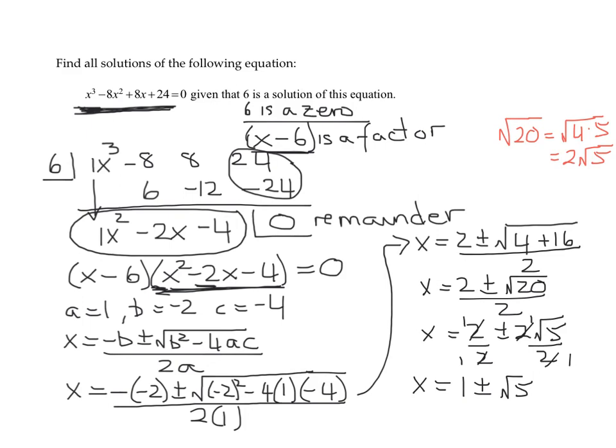So, what are all the solutions? I have x equals, we were given the solution 6. And then we have 1 plus the square root of 5 and 1 minus the square root of 5. So, there are my three solutions.